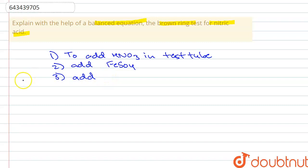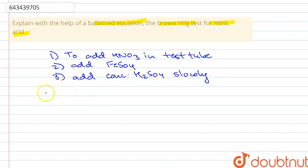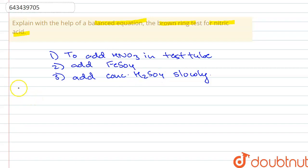We add concentrated H2SO4 slowly by the walls of the test tube because concentrated H2SO4 is highly reactive, so we have to be careful. Also, in this test a brown ring has to be formed, so we need to ensure that the concentrated H2SO4 does not get totally mixed with FeSO4 and HNO3.